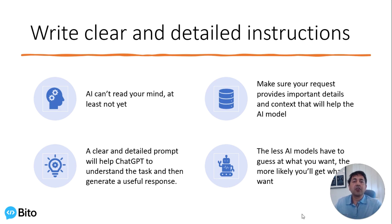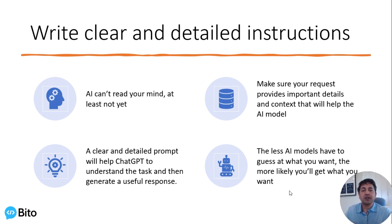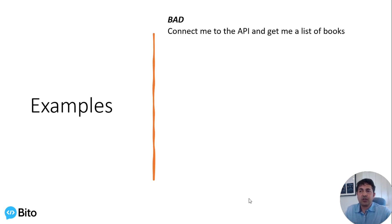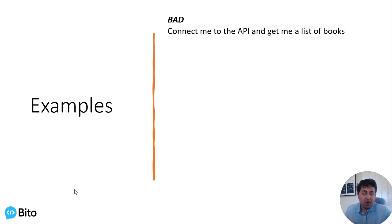If the AI models are having to guess at what you want, they're more likely not to provide what you actually do want. Here are some examples of the type of request many users actually give: 'Connect me to the API and get me a list of books.' The problem is Bido or the model underneath doesn't understand what API you want, what books you want, how many, what language you want the code in, etc.